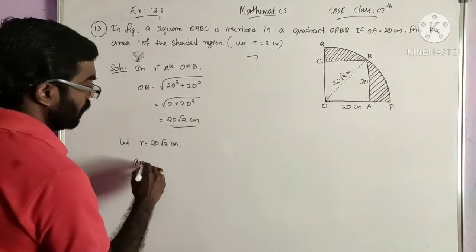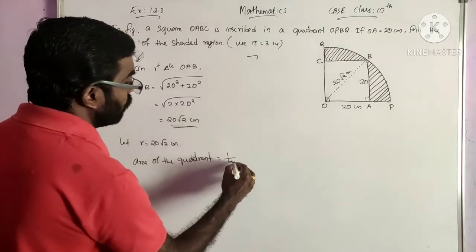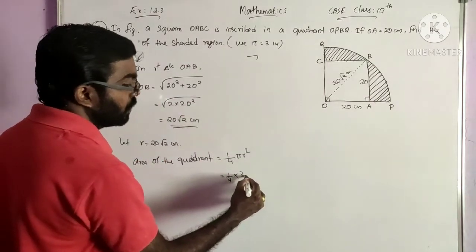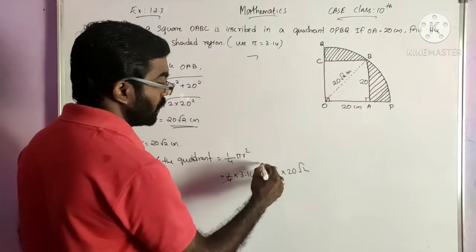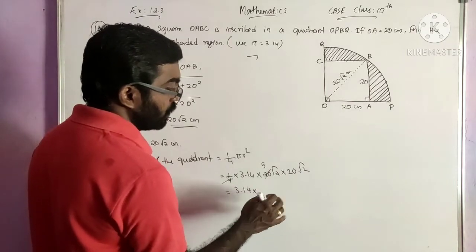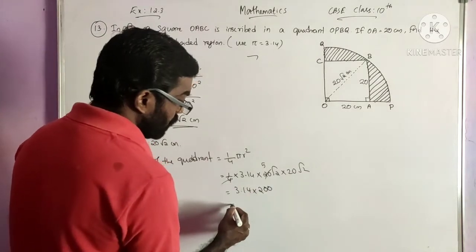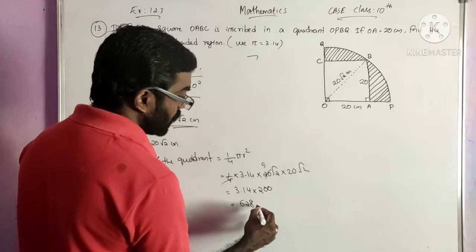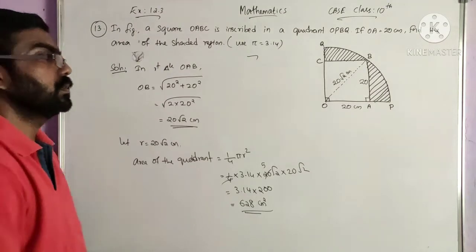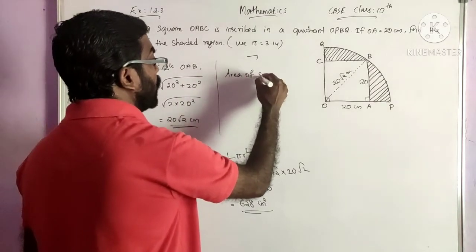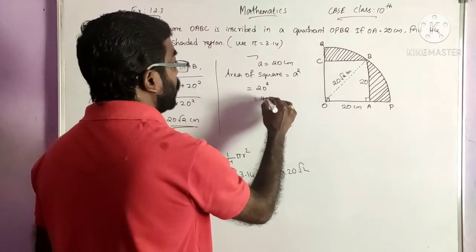Now find the area of the quadrant. Area of quadrant equals 1 by 4 pi r square, so 1 by 4 into 3.14 into 20 root 2 into 20 root 2. Cancelling factors and noting that root 2 into root 2 equals 2: we get 3.14 into 200, which equals 628 cm square.